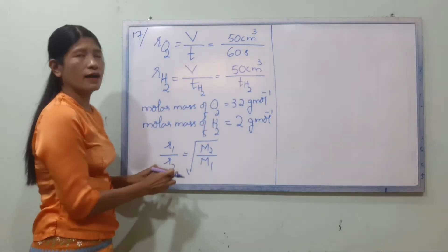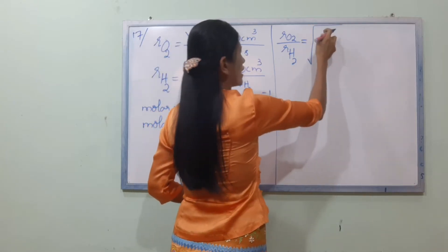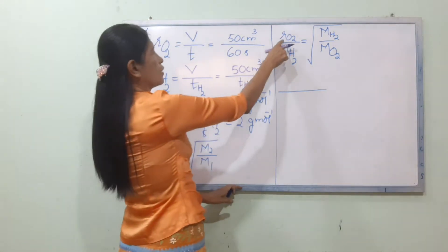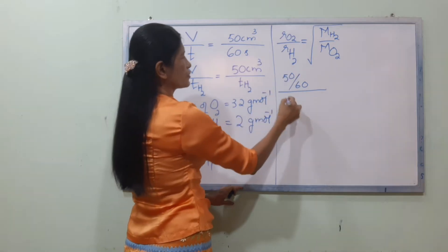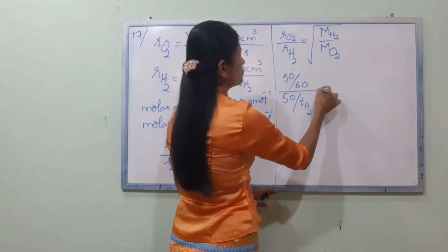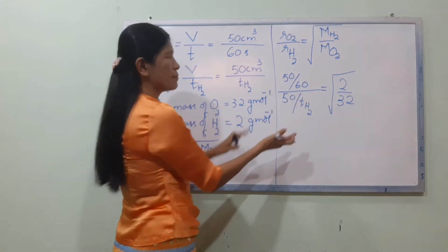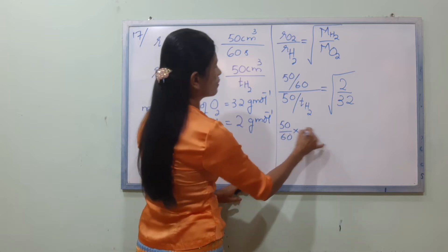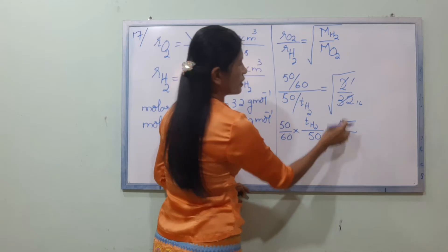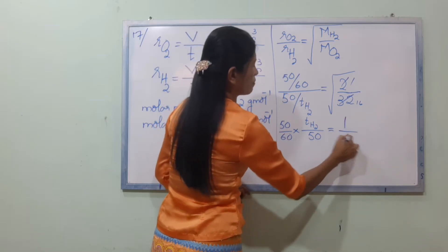R1 is oxygen and R2 is hydrogen. Setting up the ratio: R1/R2 equals the square root of M2/M1. The molecular mass of O2 is 32 and H2 is 2, giving us the square root of 1/16, which equals 1/4.